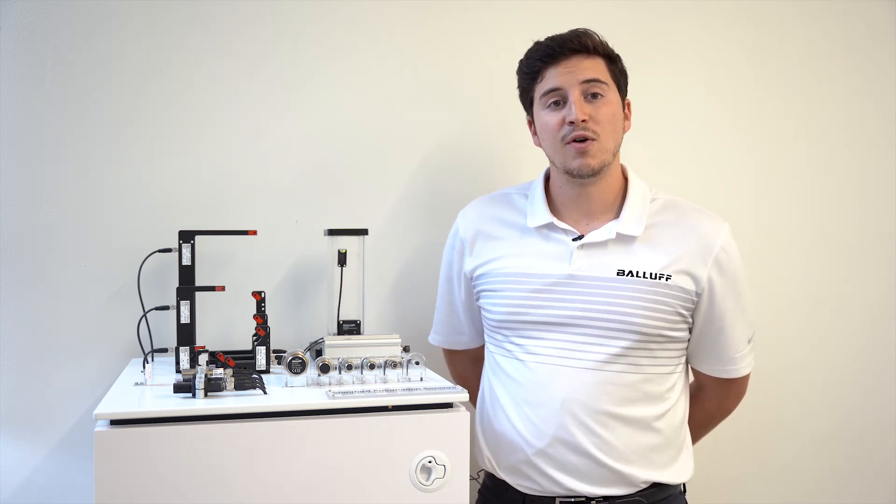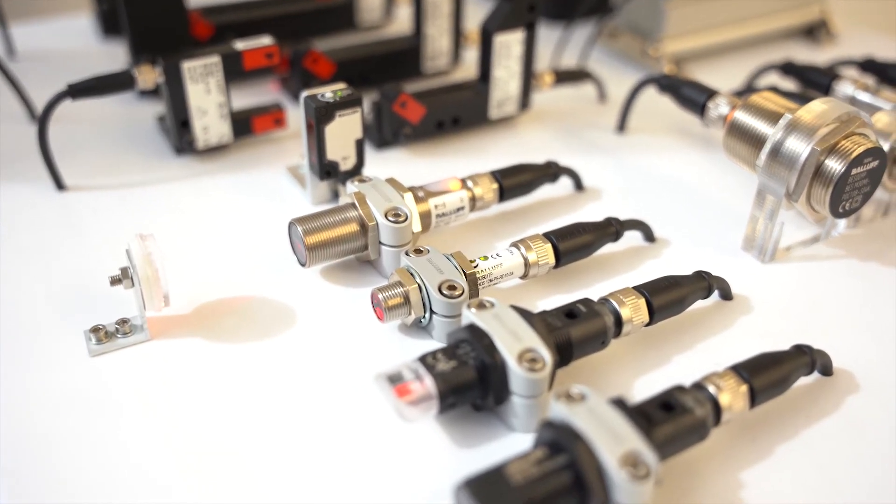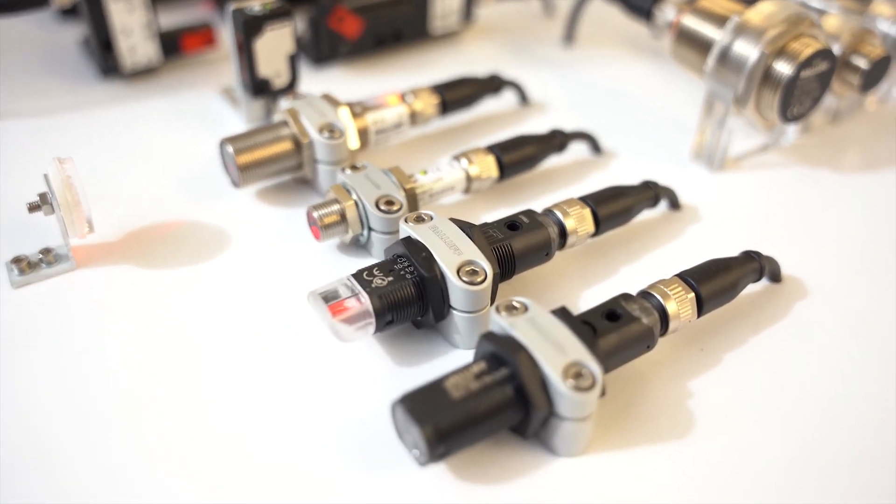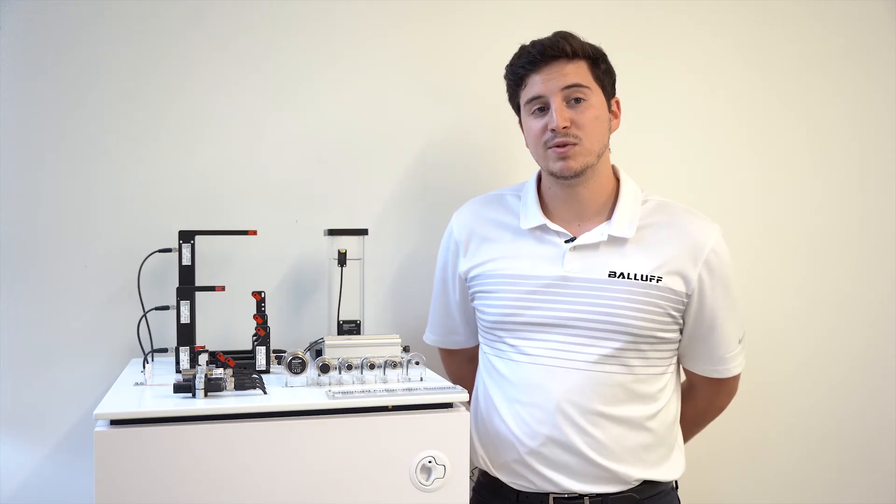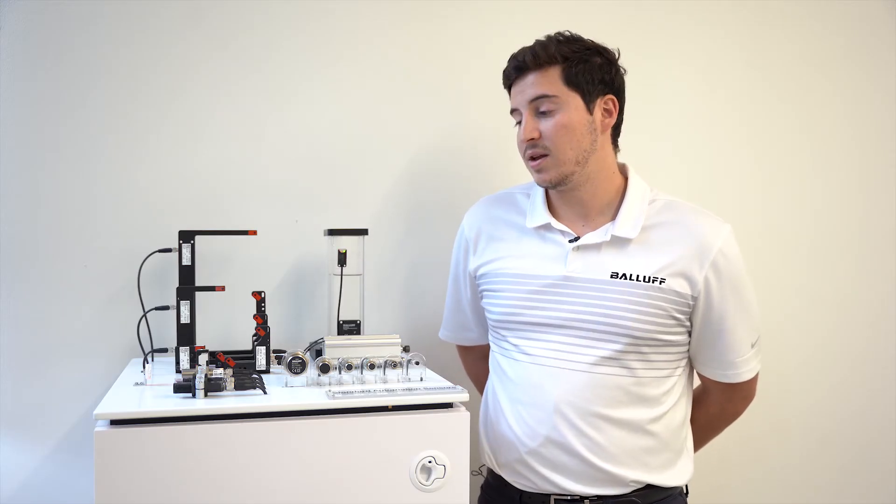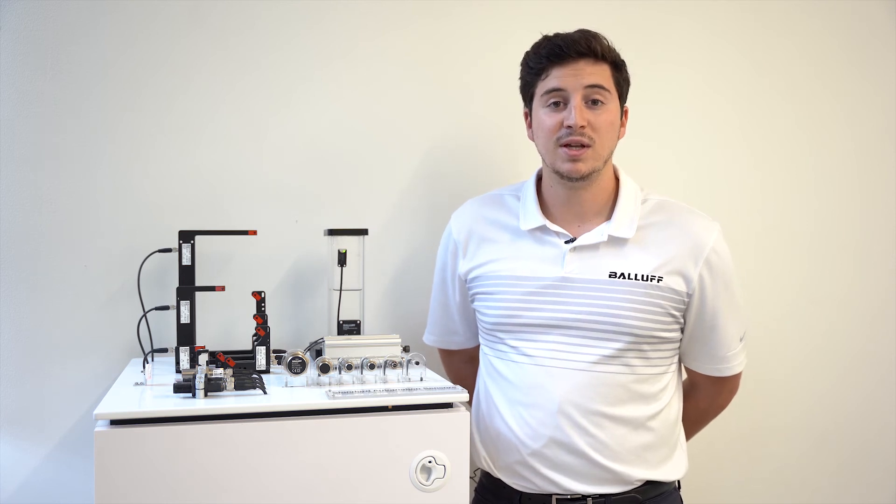Diffuse sensors overall are cost-effective and easy to mount in a line because the emitter and receiver are housed together in a single unit. And because of their highly visible light beams, they make for quick installation and easy setup.